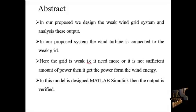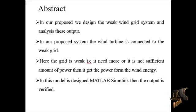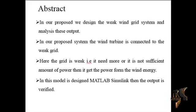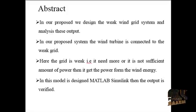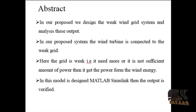So we go to another renewable source to maintain the power quality in the grid. Here we use the wind farm to maintain the power quality. If the power is reduced and a weak grid is generated, then automatically the grid gets voltage from the wind turbine, which gives a sufficient amount of voltage for the weak grid. In that case we use the wind-grid connection as it is a renewable energy source.